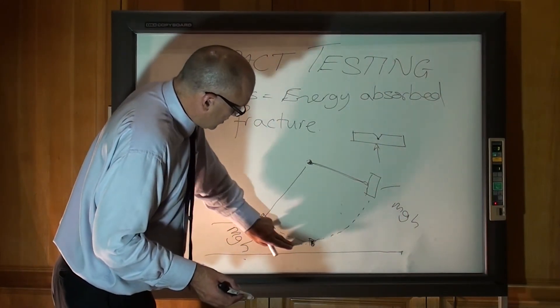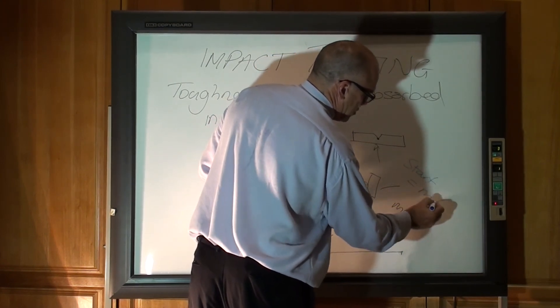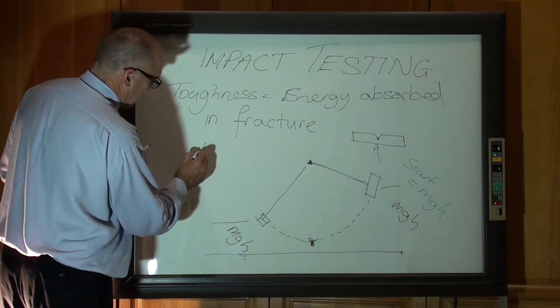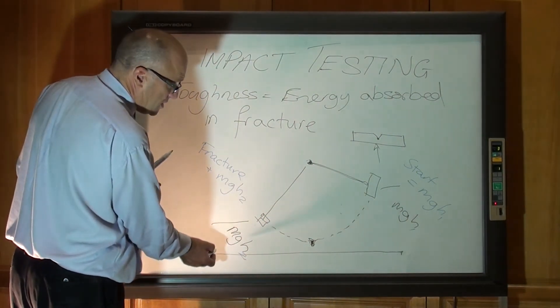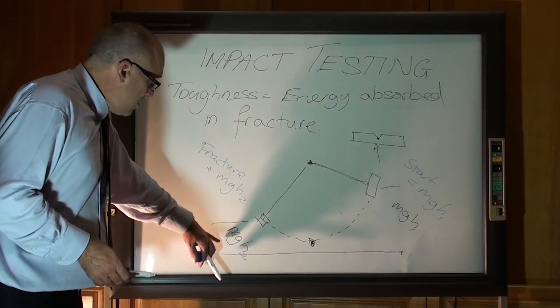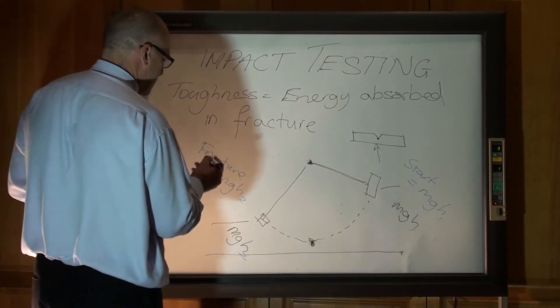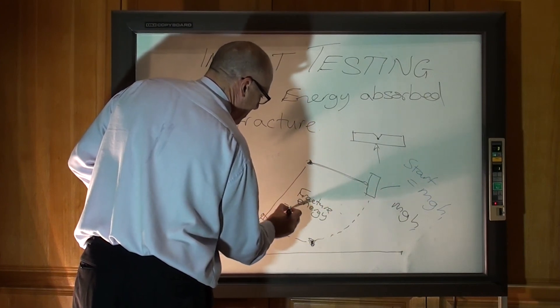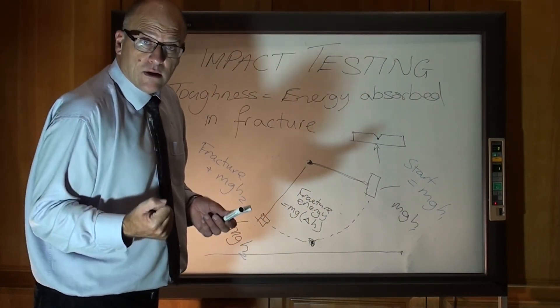A different energy because it's gone up a different height. The starting energy, start, equals MGH1. We'll call that height one. MGH2. Finish is fracture plus mass times gravity times the second height. Measure the remaining potential energy. So all that energy at the start gets converted into fracture plus the energy that's left. You measure that difference in height and you get the fracture energy. So fracture energy equals MGH times the difference in height.